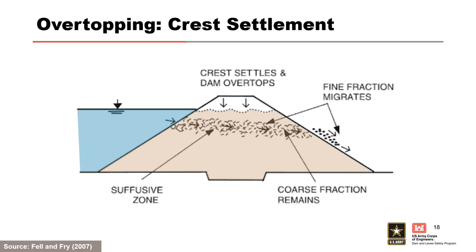Overtopping is the second internal erosion breach mechanism. In this example, fines are removed from a zone of internally unstable material in the embankment by suffusion, and the overlying fines move into the remnant openwork zone by internal migration, leading to crest settlement large enough to result in overtopping. Alternatively, suffusion can occur in a zone of internally unstable material in the embankment resulting in settlement that leads to overtopping. As previously mentioned, most breach mechanisms will eventually lead to overtopping.